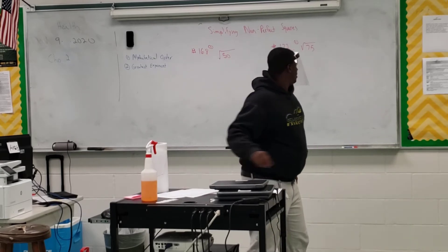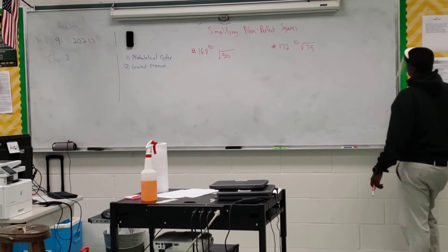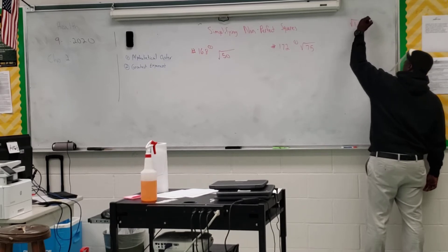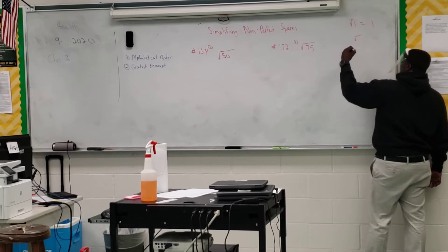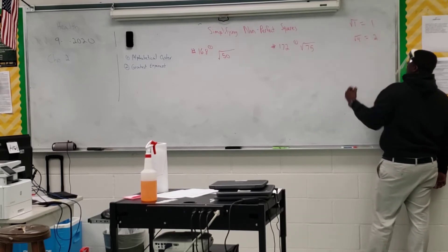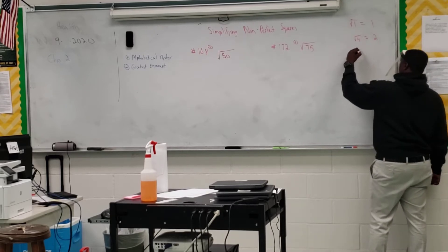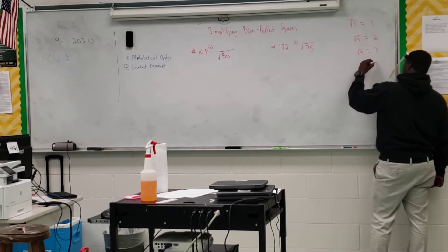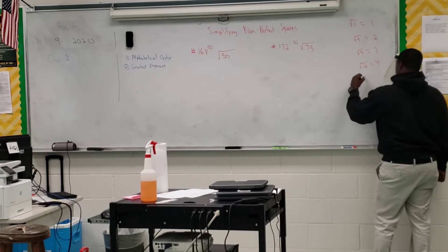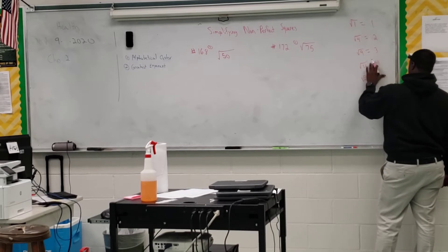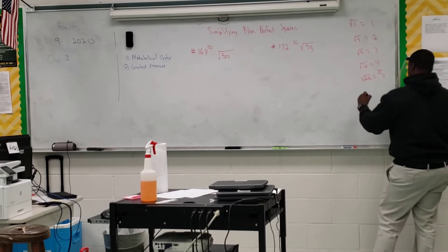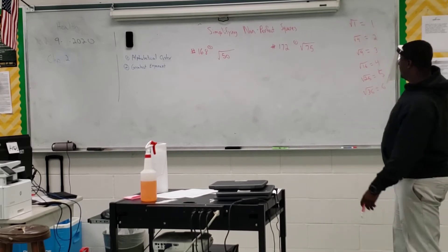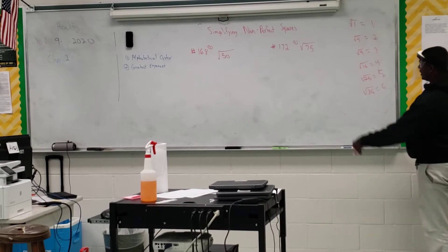Right over here, let's cheat a little bit. We have the perfect squares. We know one times one — so the square root of one equals one. Two times two equals four, so the square root of four is two. Three times three is nine, so the square root of nine is three. Four times four is 16, so the square root of 16 is four. Five times five is 25, so the square root of 25 is five. Six times six is 36, so the square root of 36 is six, and so on. Let's keep going until we get past 50, and I don't want to go past 75.